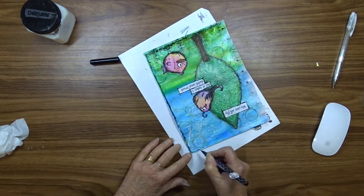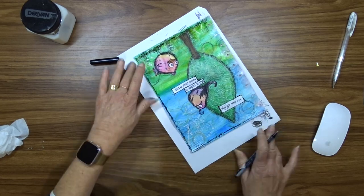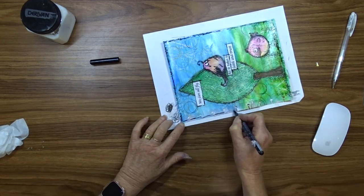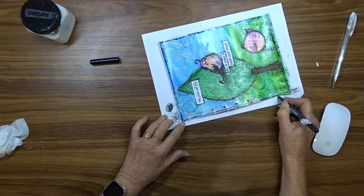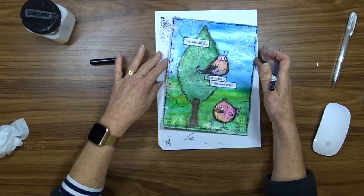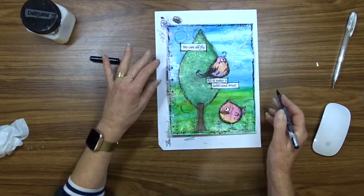While I've got my Pigma Micron going I also do a scribbly border around the whole page. I scribble without any sort of pattern to this.